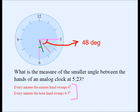Now what about the hour hand — the green angle? The hour hand is moving from the 5 toward the 6. It took 23 minutes to get to its current position, so it has 37 minutes remaining to reach the 6. The hour hand will sweep the green angle in 37 minutes. Since it sweeps 0.5 degrees per minute, in 37 minutes it sweeps 37 times 0.5, which equals 18.5 degrees.